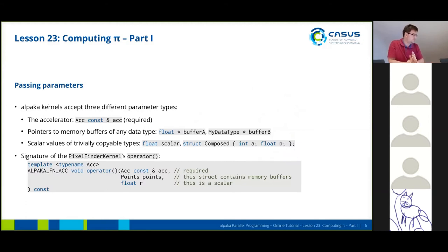To do this we first need to pass parameters to the kernel. There are three different types of parameters you can pass to an alpaca kernel. First, the accelerator type, which is always required. You always have to pass this one to a kernel.